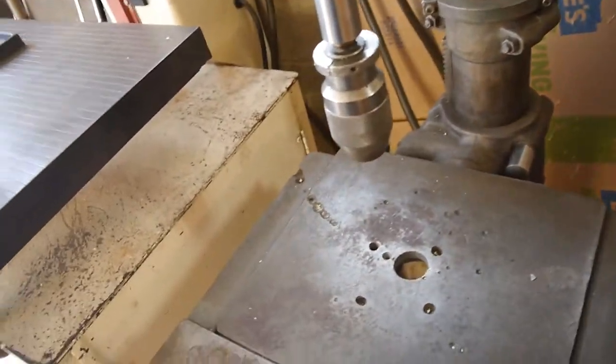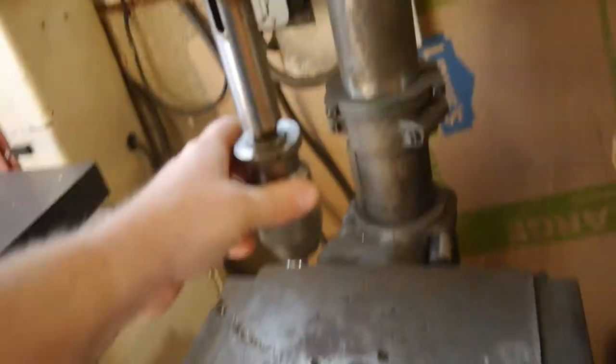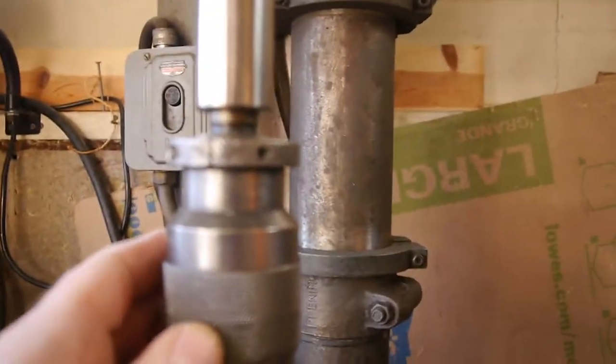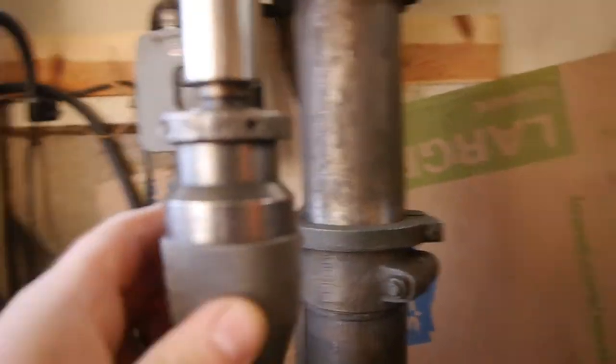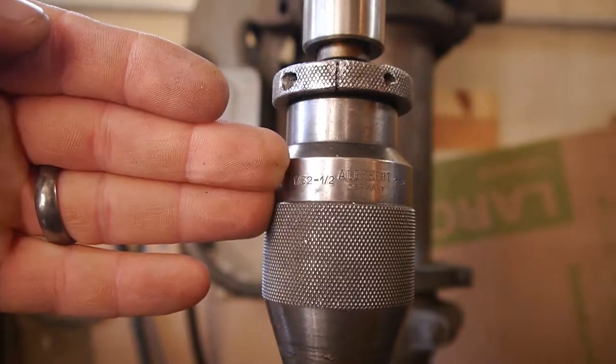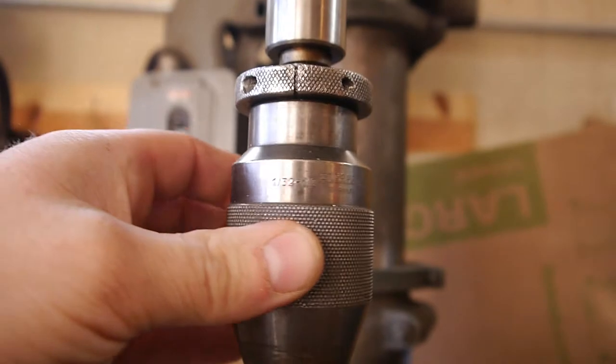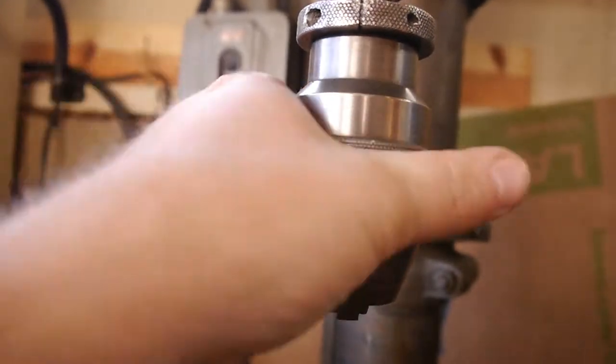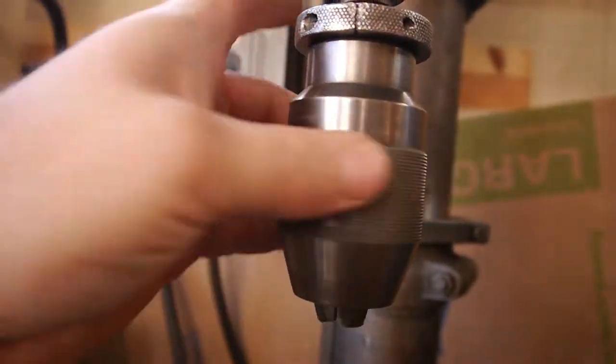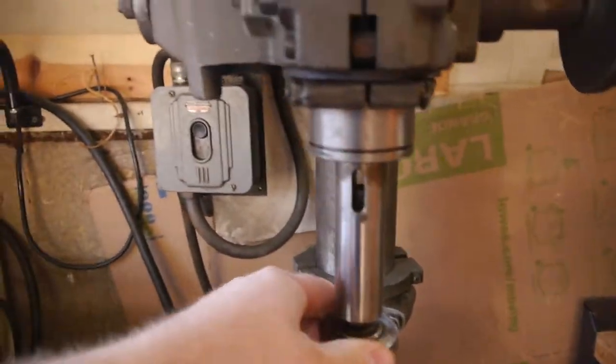And now she's locked. And this table is much more substantial. She does have a few more years on her. The second reason, well, another reason is it's got this really nice one 32nd to half inch Albrecht chuck in it. Real smooth, keyless, just a nice bit of kit, I suppose.